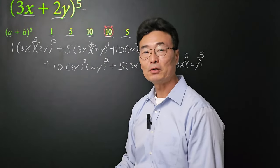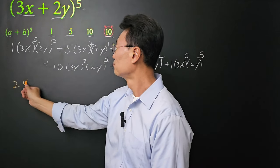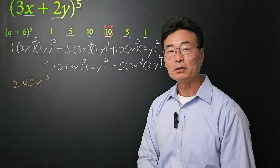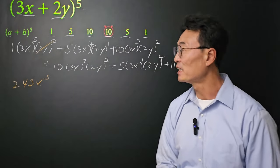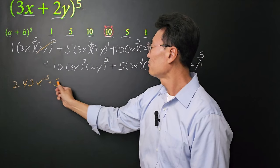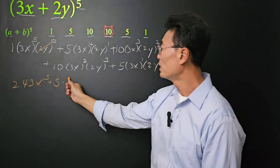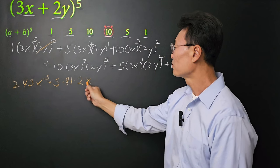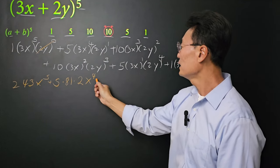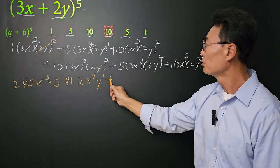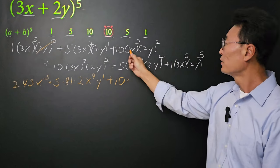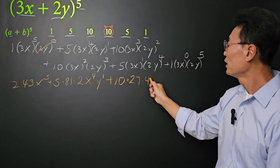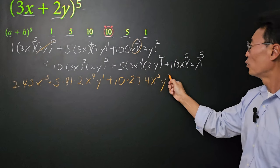First, we have 3 to the 5th power, which is 243. And 2y to the 0 power is just 1, so we cancel that out. Then plus 5 times 3 to the 4th power, which is 81, times 2 to the 1st power, which is 2, giving us x to the 4th and y to the 1st. Continuing: plus, we have the 10 in front. 3 to the 3rd power is 27; 2 squared is 4. And we have x cubed and y squared.